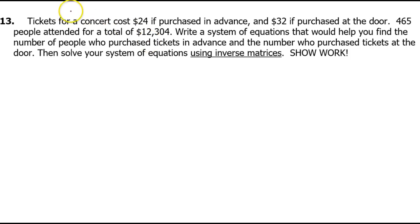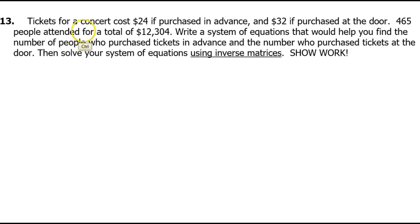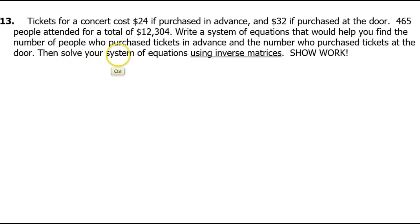Let's read through the problem. Tickets for a concert cost $24 if purchased in advance and $32 if purchased at the door. 465 people attended for a total of $12,304. Write a system of equations to find the number of people who purchased tickets in advance and at the door, then solve using inverses.